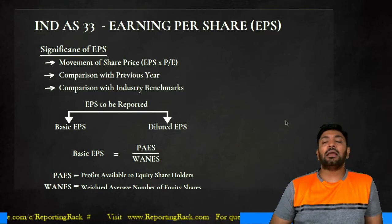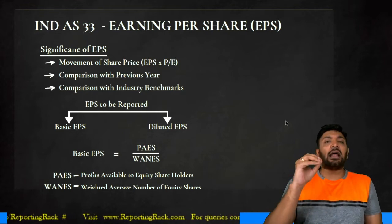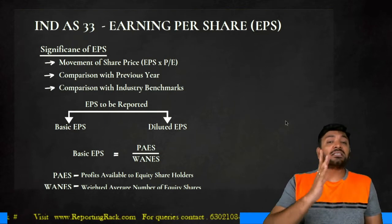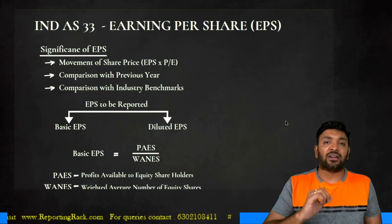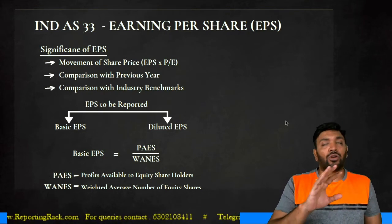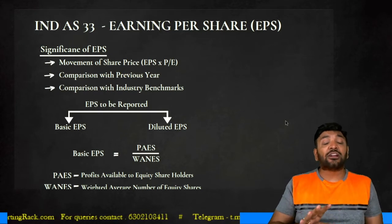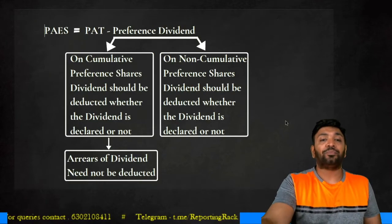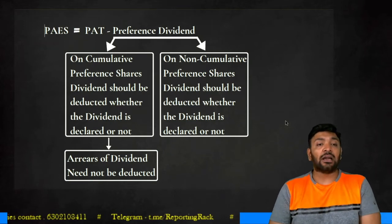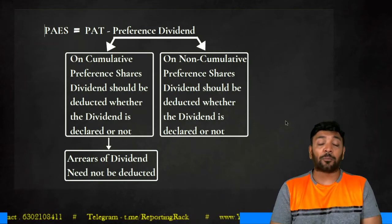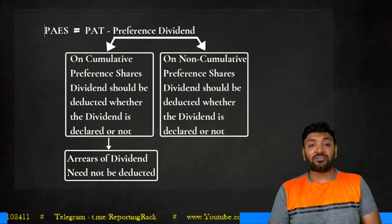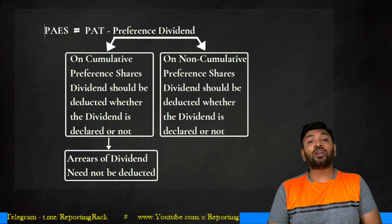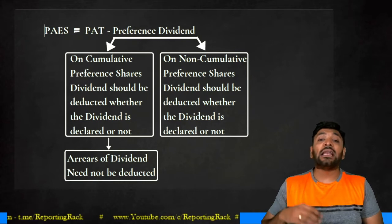One more aspect: if cumulative preference dividend was not paid for the last two years and arrears appear, should the arrears be deducted? Not necessary — because you are already deducting preference dividend every year for cumulative preference shares, arrears need not be deducted again. To summarize: for cumulative preference shares, deduct whether declared or not; for non-cumulative, deduct only if declared.